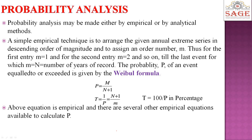Probability analysis may be made either by empirical or by analytical methods. A simple empirical technique is to arrange the given annual extreme series in descending order of magnitude and to assign an order number m — for the first entry m=1, second entry m=2, and so on, till the last event for which m equals n (number of years of record). The probability P of an event being equaled or exceeded is given by Weibull's formula.